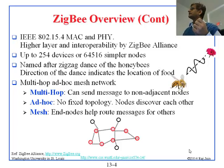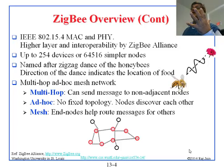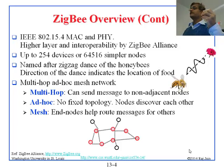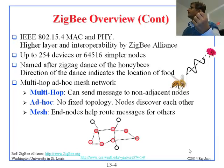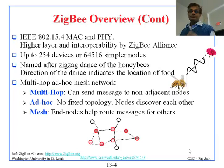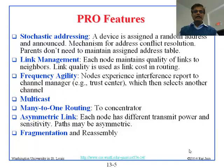Ad-hoc is about a very dynamic topology — you cannot have a fixed infrastructure like a base station. Multi-hop is basically because of the mesh in some sense. These are three different concepts: mesh, ad-hoc, and multi-hop.